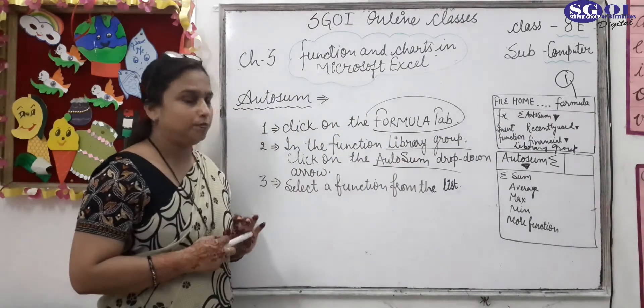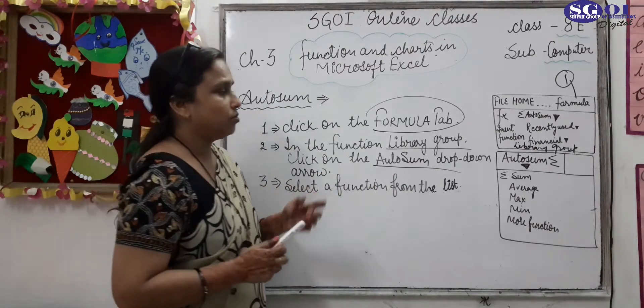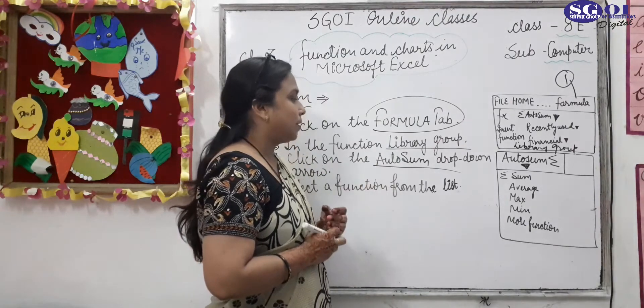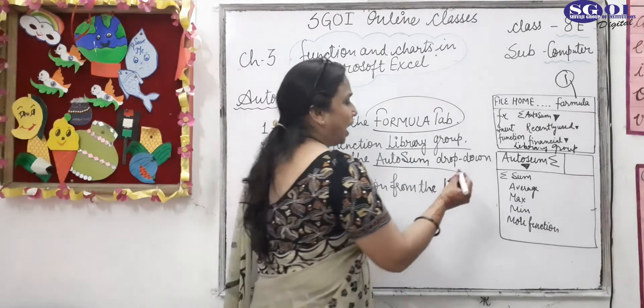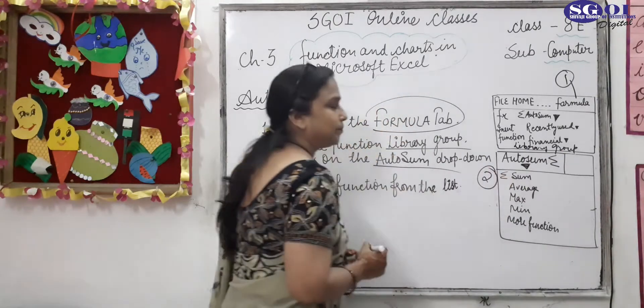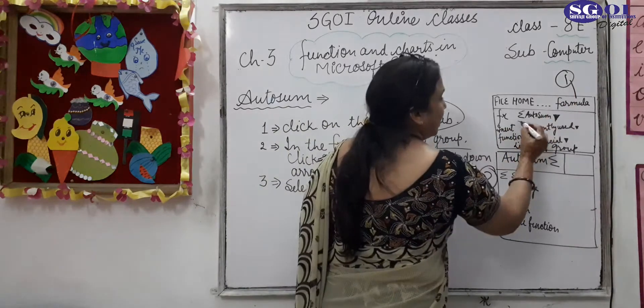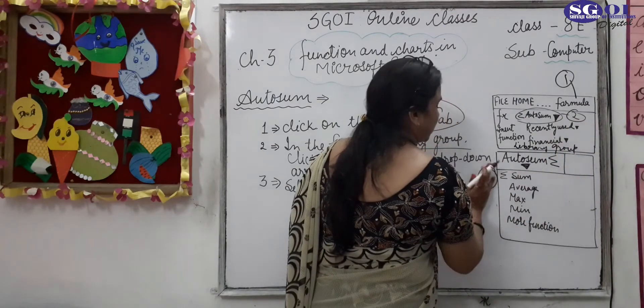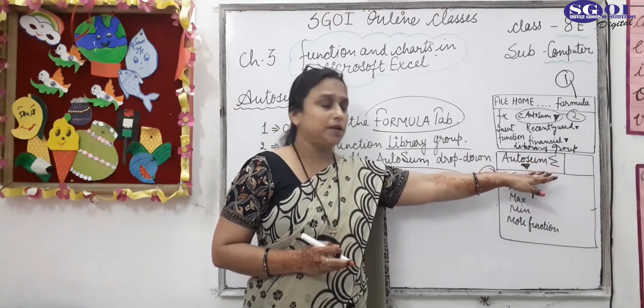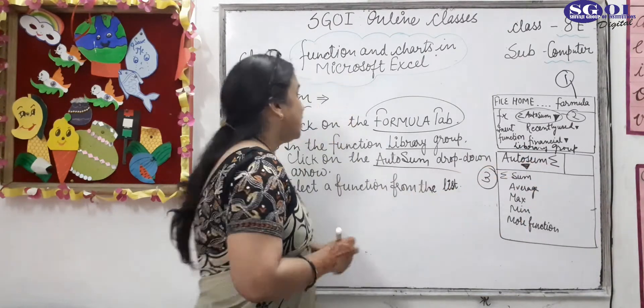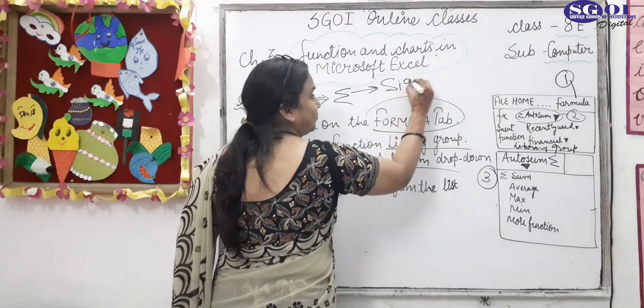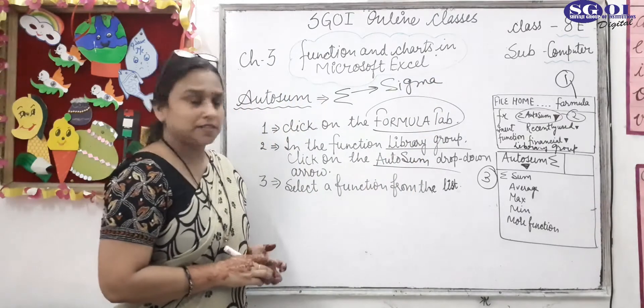That means in library group there are so many functions available. So now click on auto sum drop down arrow. When you click on auto sum drop down arrow your window opens. This is the second step and the third step is here.